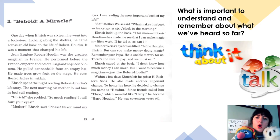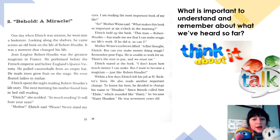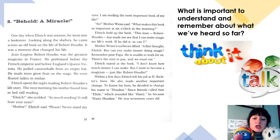'What makes this book so important at six o'clock in the morning?' Mother Weiss asked. Enric held up the book. 'This man, Robert Houdin, has made me see that I can make magic my life's work. If he did it, so can I.' Mother Weiss raised her eyebrows. 'A fine thought, Enric — but can you make money doing magic? Remember poor Papa; he is unable to work for us. There's rent to pay and we must eat.' Enric stared at the book. 'I don't know how much money I can make, but I want to become a magician, just like Robert Houdin.' Within a few days, Enric left his job at H. Richter's Sons. To honor his hero, he decided to change his name to Houdini. Since friends called him 'Airy' which sounded like Harry, he became Harry Houdini. He was 17 years old.